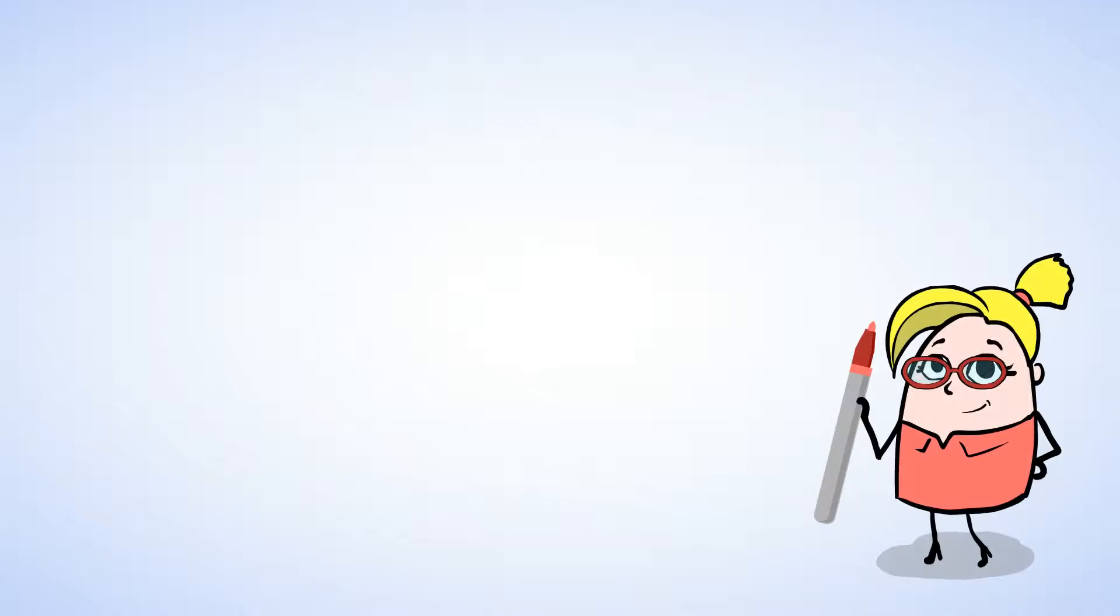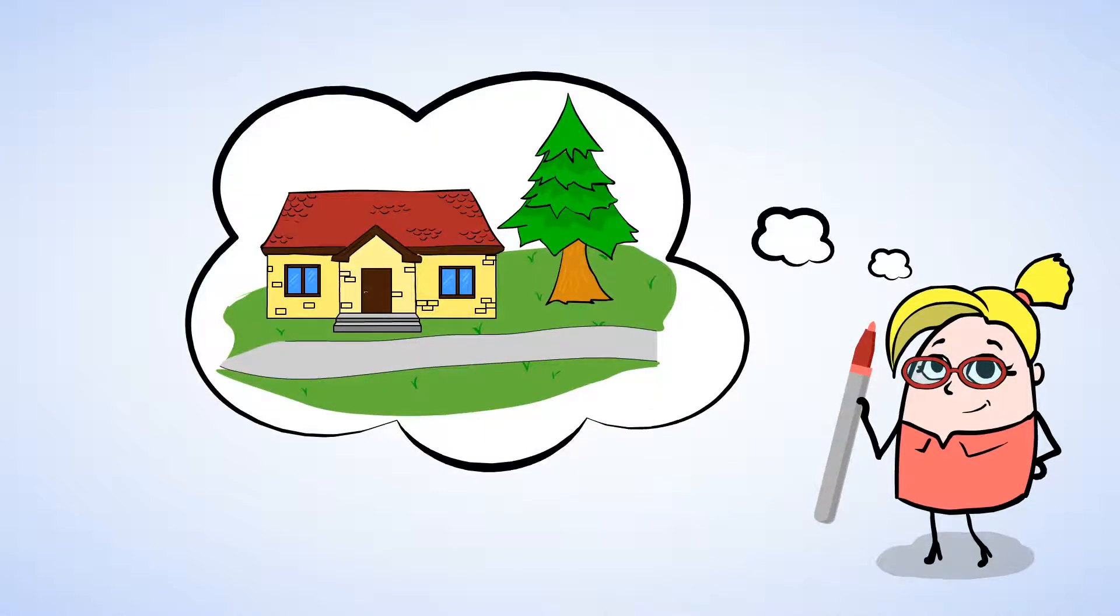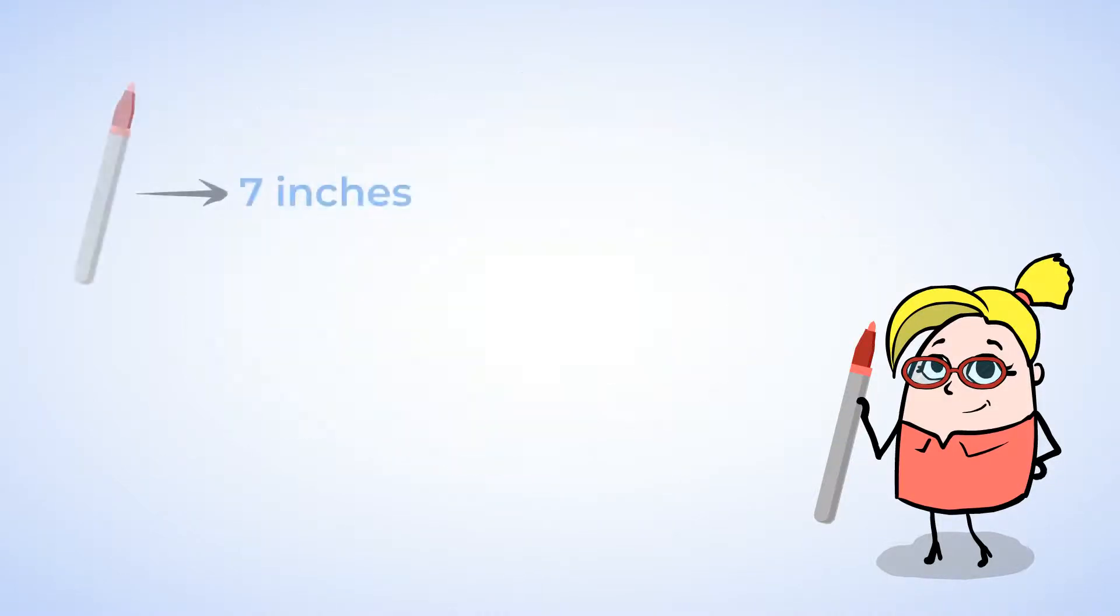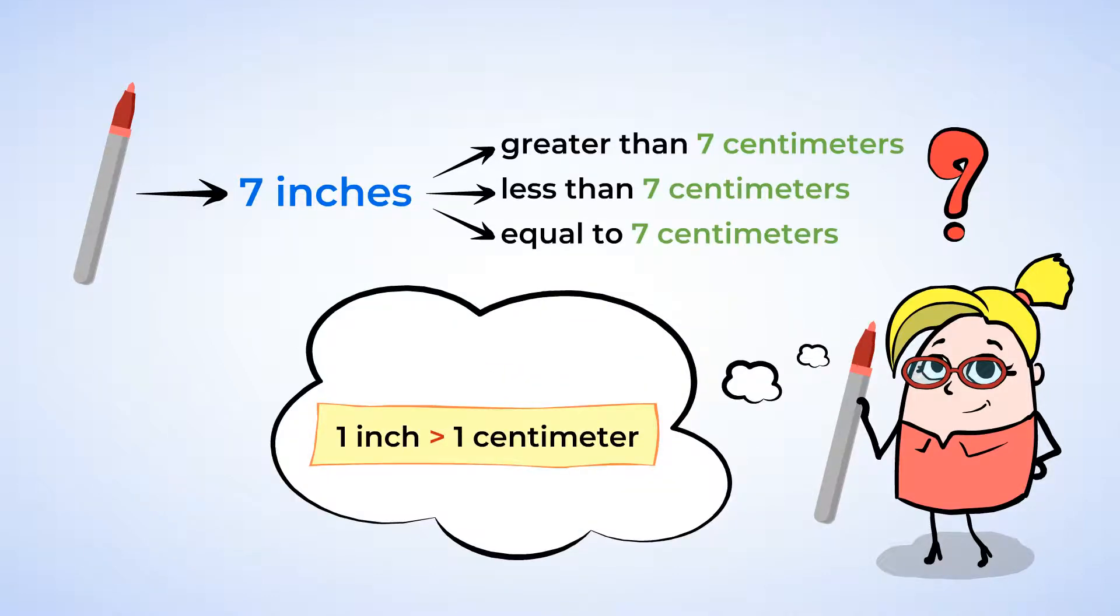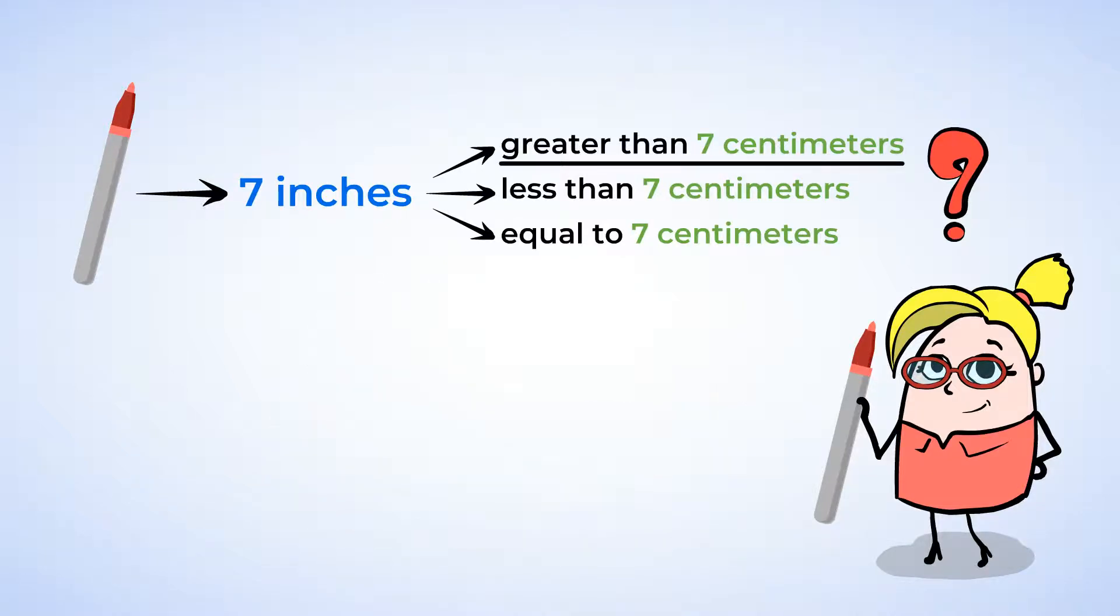Now, here's a marker that usually we use to draw pictures. But instead, we're going to use it to make a guess about its measurement. Now, I know that the marker is 7 inches long. If we measure it in centimeters, will the number of centimeters be greater than, less than, or equal to 7? Well, let's remember what we've learned so far. Centimeters are smaller. And so, we're going to need more centimeters than inches to measure the same object. And since the marker is 7 inches, we know that it'll be more than 7 centimeters long.